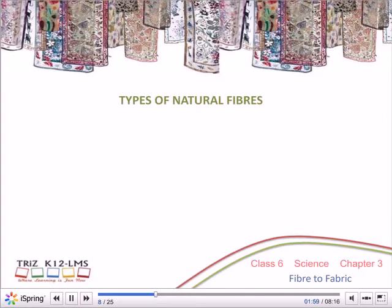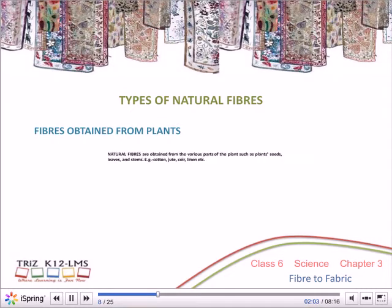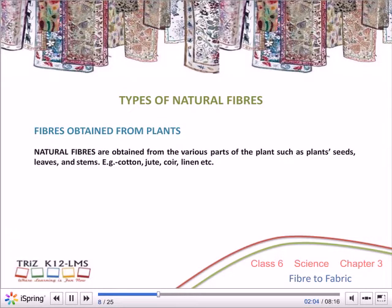Natural fibres are obtained from various parts of the plant such as plant seeds, leaves and stems. Examples include cotton, jute, coir, linen, etc.